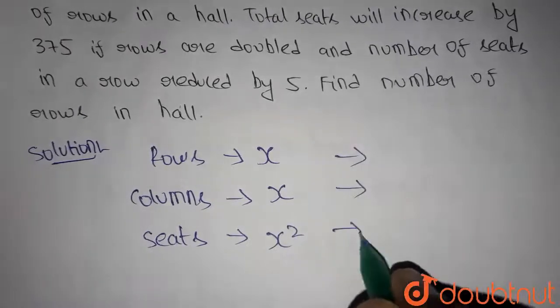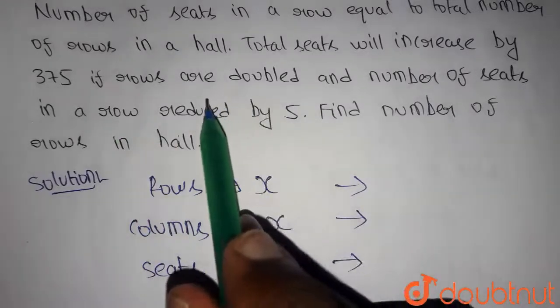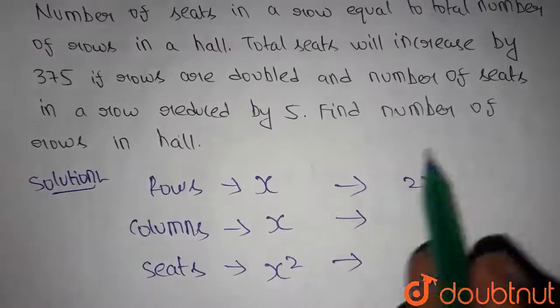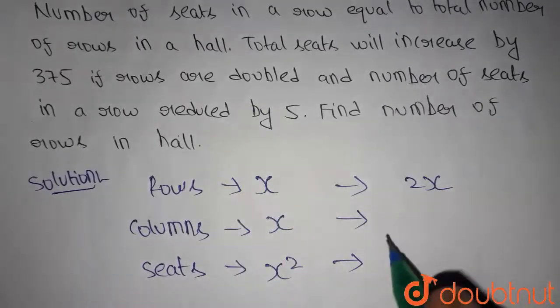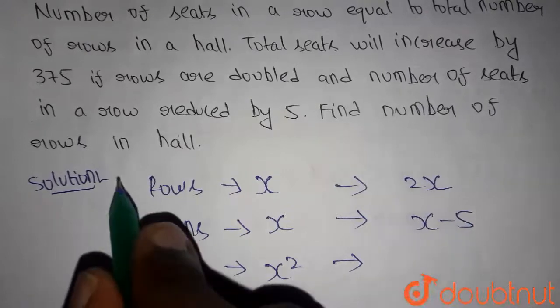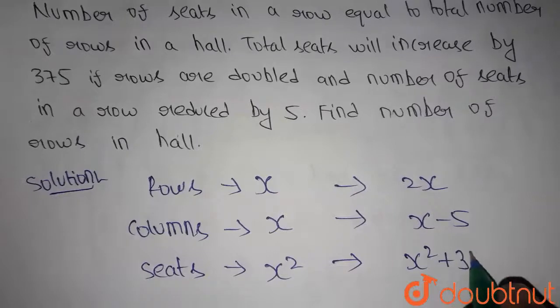Now we are doing some modifications to this arrangement. We are increasing the rows two times, so rows will become 2x and decreasing the seats by 5, so columns will become x minus 5. Then the seats are increased by 375, so it will become x squared plus 375.